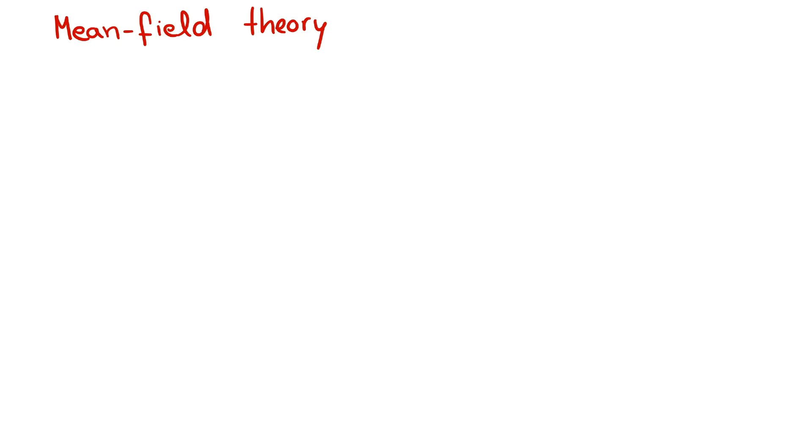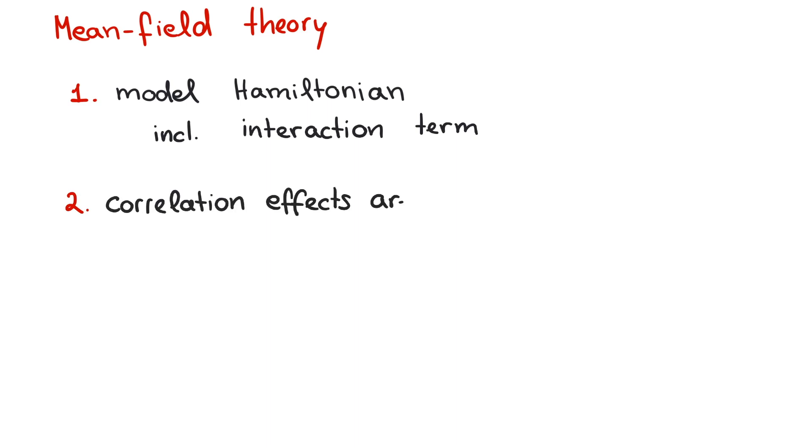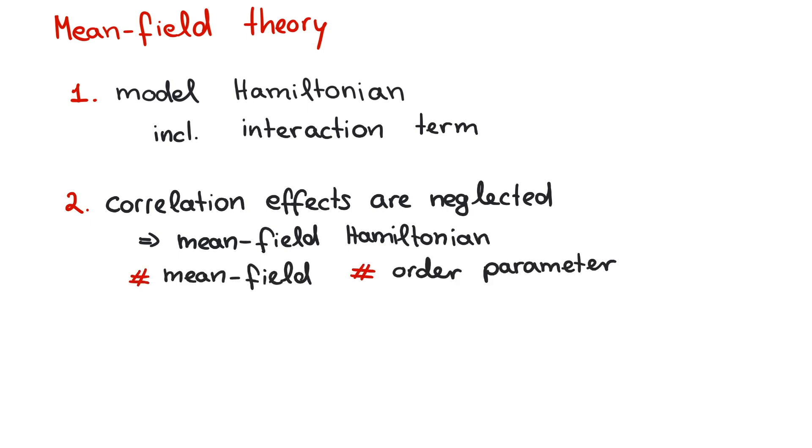Every mean field theory consists of three steps. First, the system is described in terms of a model Hamiltonian, which contains some interaction term or coupling. Second, correlation effects are neglected in order to arrive at a new mean field Hamiltonian. Along the way, a mean field and an order parameter are defined.